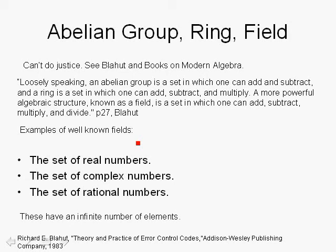Some well-known fields where addition, subtraction, multiplication, and division are defined include the set of real numbers, the set of complex numbers, and the set of rational numbers. For example, when you multiply two real numbers, you get a real number which is part of the set. These fields have an infinite number of elements. If you deal with a field with a finite number of elements, you get into Galois fields, due to the French mathematician Galois.